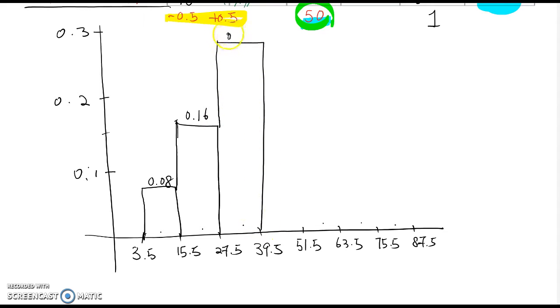So which is 0.28, and then fourth one, 0.16 again. So I put 0.16, another 0.16, then 0.08, 0.18, and then 0.08.